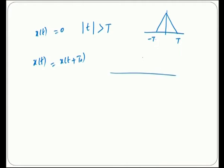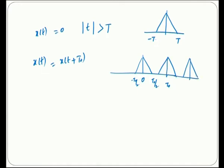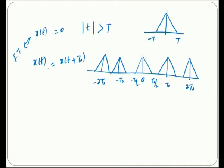The periodic signal repeats for every t-naught. We can visualize the signal at positions minus 2t-naught, minus t-naught, 0, t-naught by 2, t-naught, and 2t-naught. The first case is a non-periodic signal, and the second is a periodic signal. The non-periodic signal is solved using the Fourier transform (abbreviated FT), while the periodic signal is solved using the Fourier series.